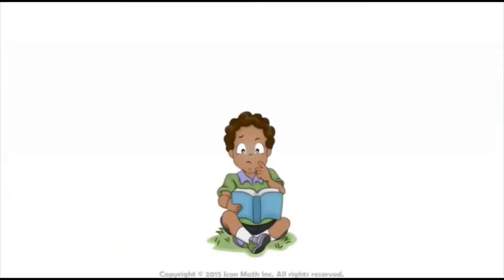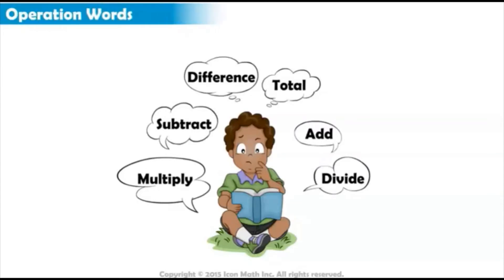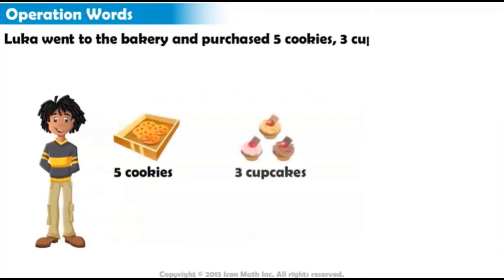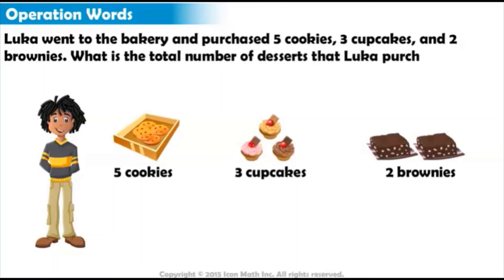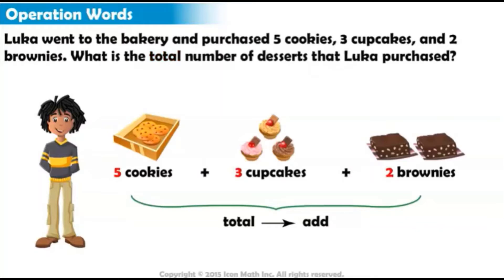When reading a word problem, there are often clue words that help us identify the operation that needs to be performed. Let's improve our understanding of word problems by spotting clue words. Luca went to the bakery and purchased five cookies, three cupcakes, and two brownies. What is the total number of desserts that Luca purchased? Did you spot the clue? The word 'total' lets us know we are looking for the combined number of desserts. So we need to add together the number of cookies, cupcakes, and brownies. The total is 10 desserts.